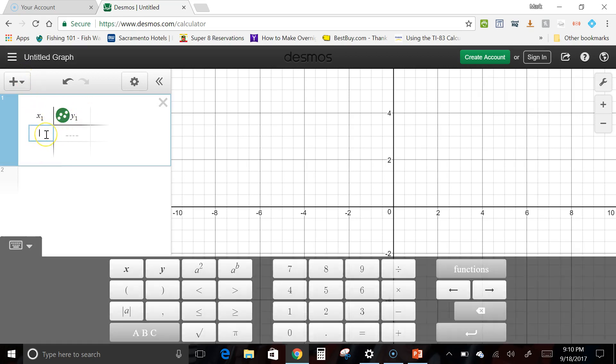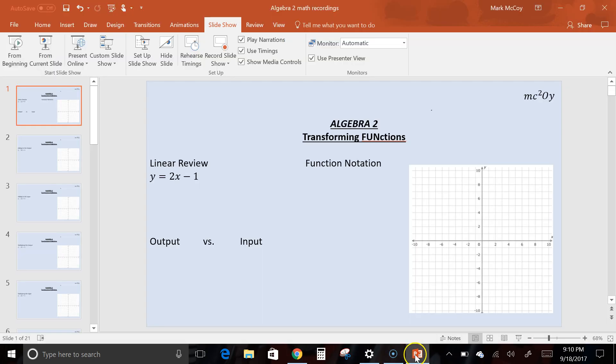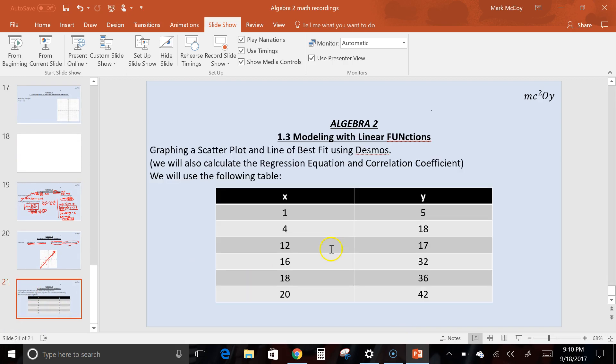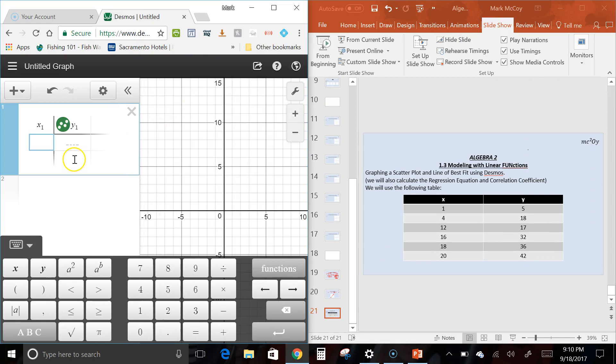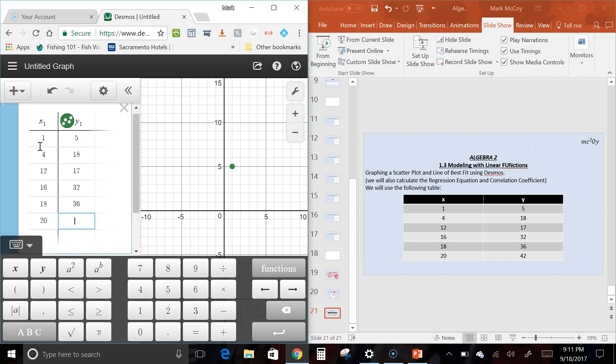It's going to give you this option, so X1 and Y1. I'm just going to put in that same table that I had on that slide right there. So we've got 1, and I'm going to tab over, and 5, and then tab, 4, and 18, and 12, and 17. And 16, and 32, and 18, and 36, and tab over one more, 20, and 42. Always double-check your points, so 1, 4, 12, 16, 18, 20, and 5, 18, 17, 32, 36, and 42.